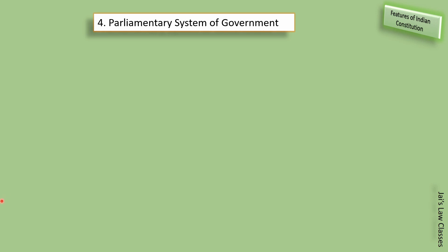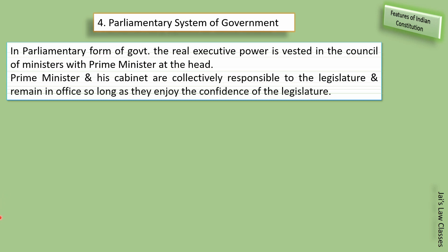Fourth point is parliamentary system of government. In a parliamentary form of government, the real executive power is vested in the council of ministers with the prime minister as head. The prime minister and his cabinet are collectively responsible to the legislature and remain in office so long as they enjoy the confidence of the legislature — jab tak unki majority hai, ve parliament mein rahenge.